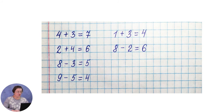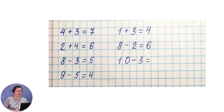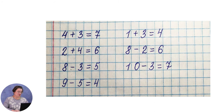Ниже, через одну клетку, пишем следующий пример: 10 минус 3. Уточняем арифметическое действие — здесь, верно, вычитание. Вспоминаем состав числа. 10 минус 3 — и сколько? Верно, 7. Значит, 10 минус 3 равно 7.